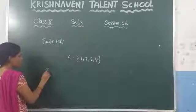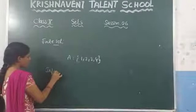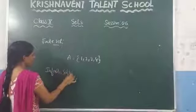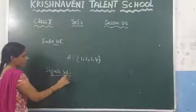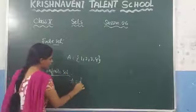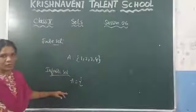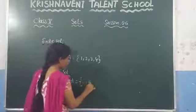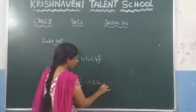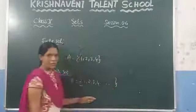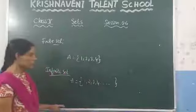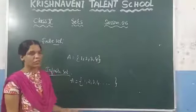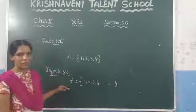Then, what is meant by the infinite set? If the set contains an infinite number of elements, we call those sets an infinite set. Consider the set of natural numbers. You know that the set of natural numbers starts from 1, 2, 3, 4, and so on. Here, you can observe that we cannot count the number of elements present in the set. So we can say that this set is an infinite set.